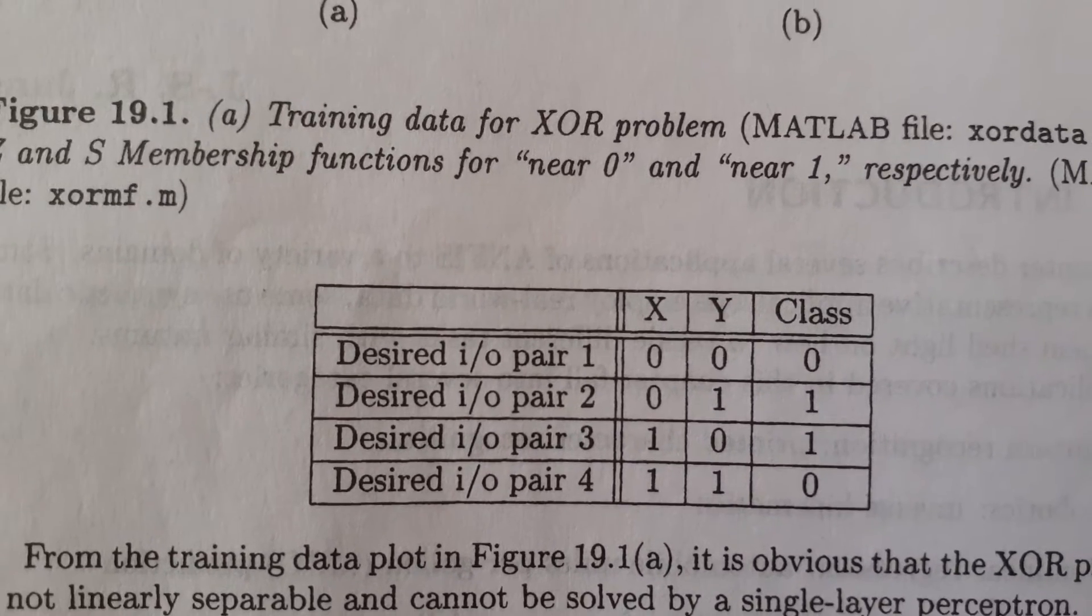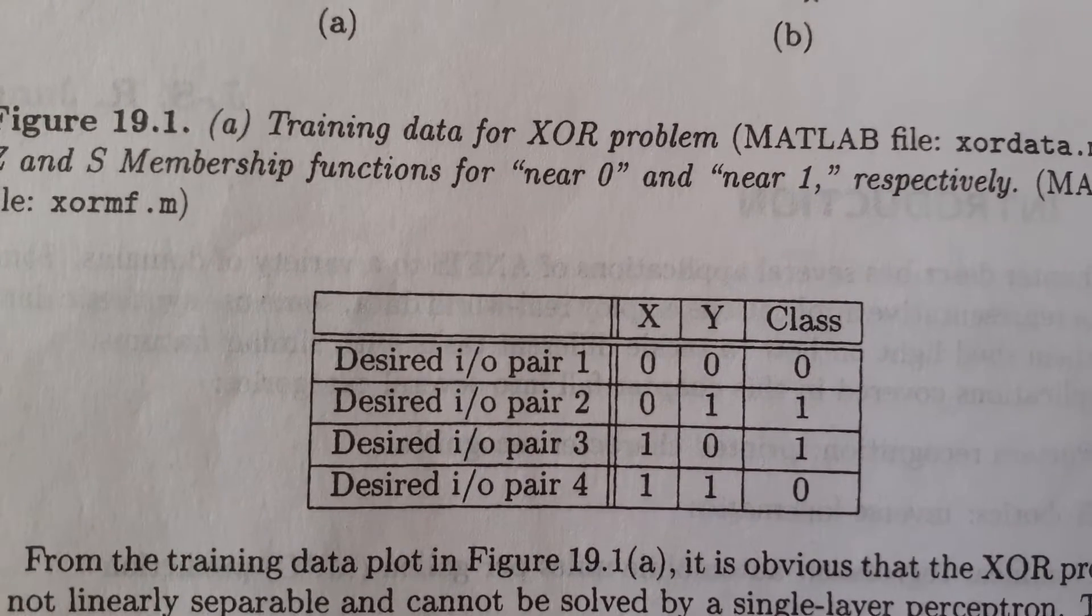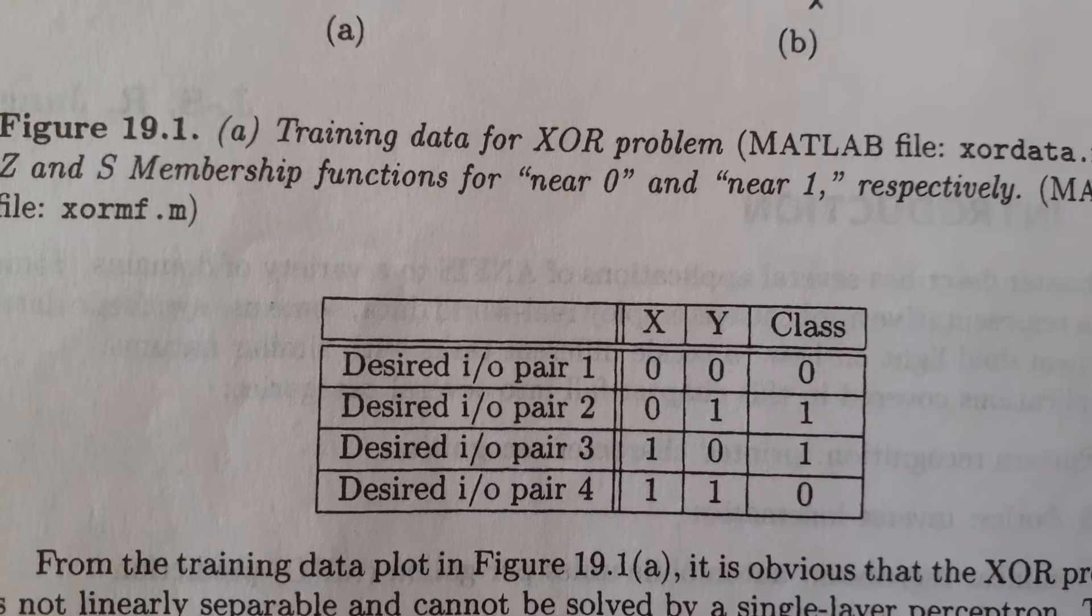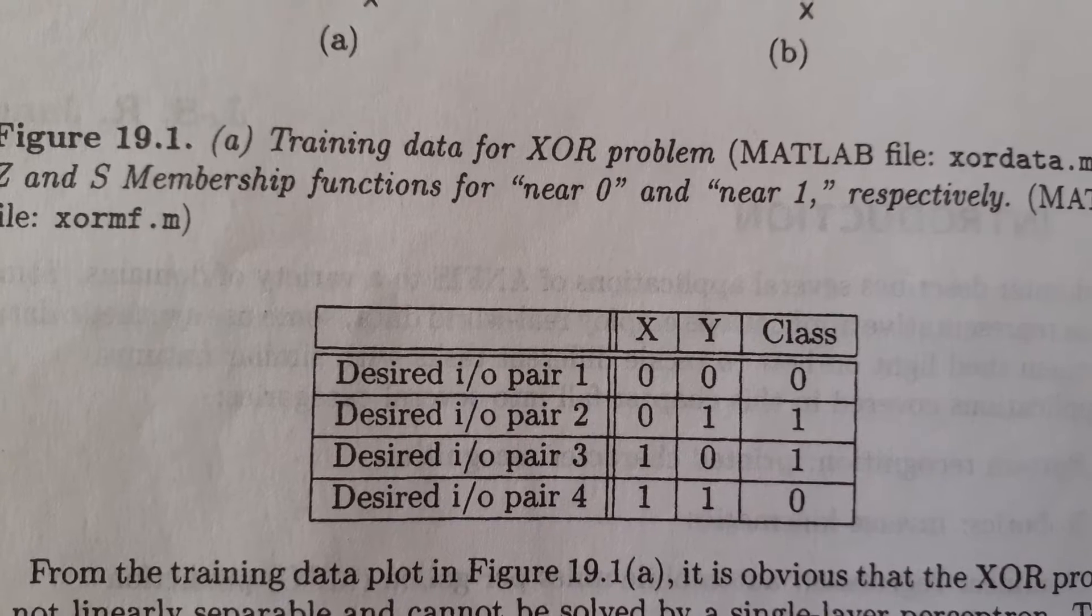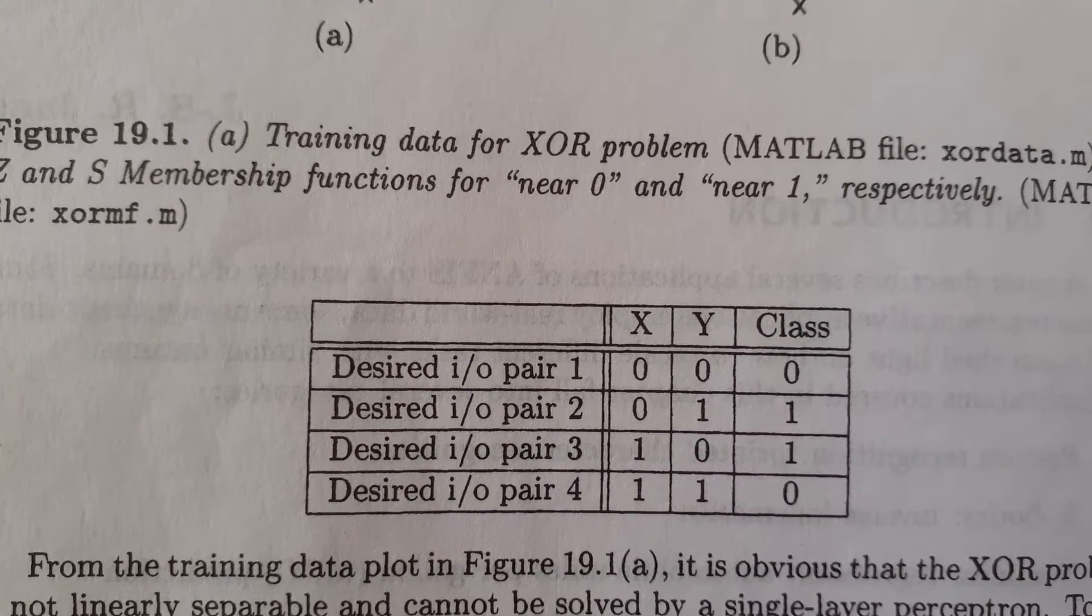This is the truth table for the XOR problem. If both x and y are same, then it belongs to class 0, otherwise class 1.